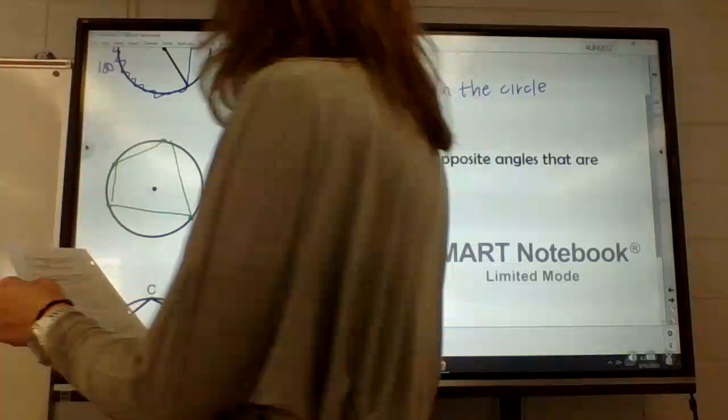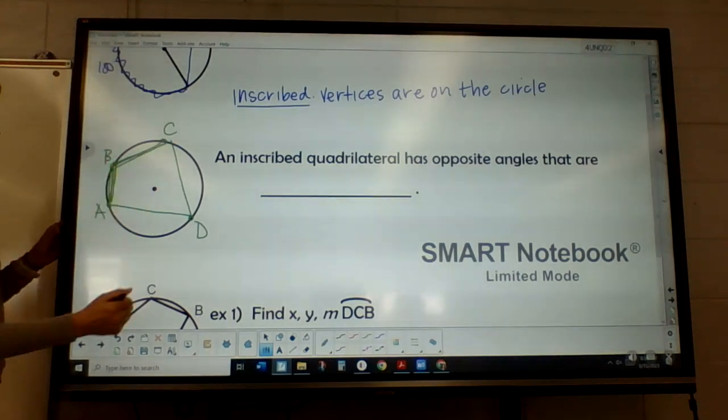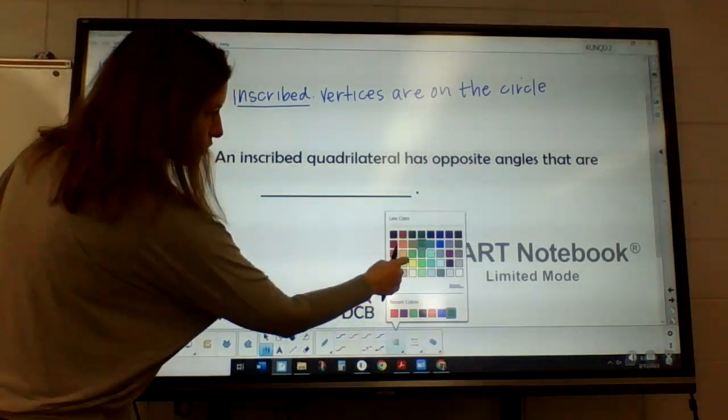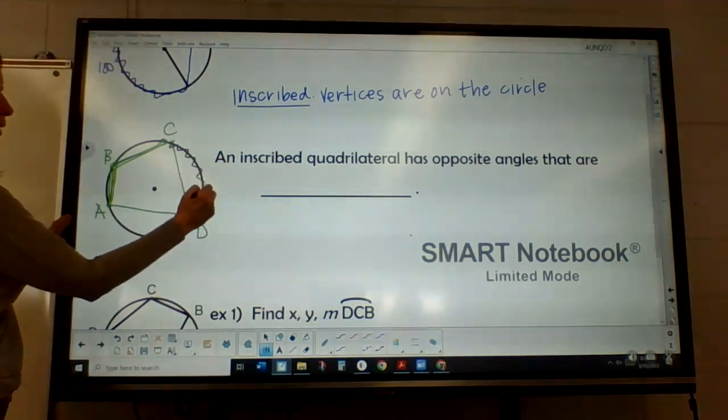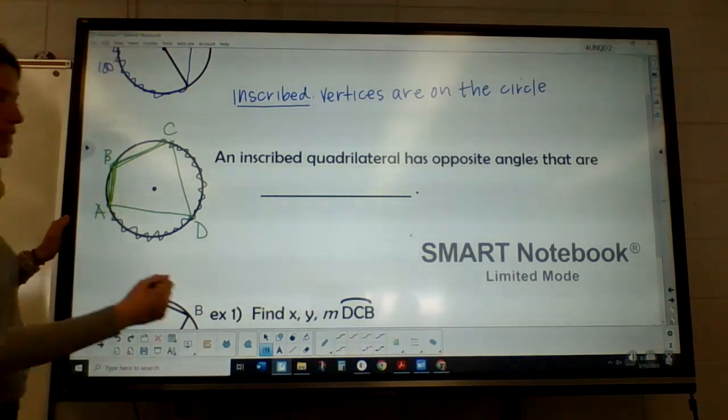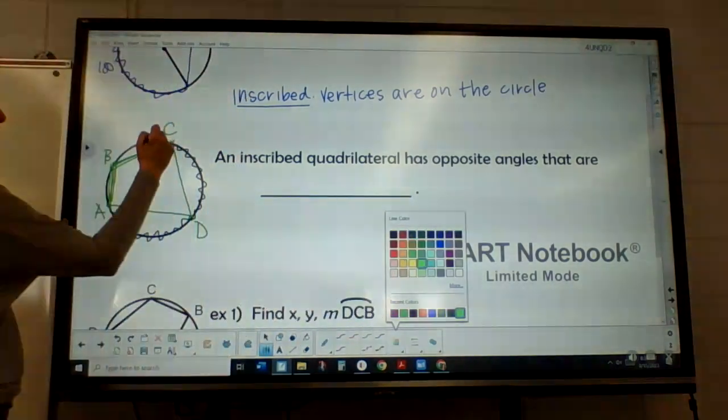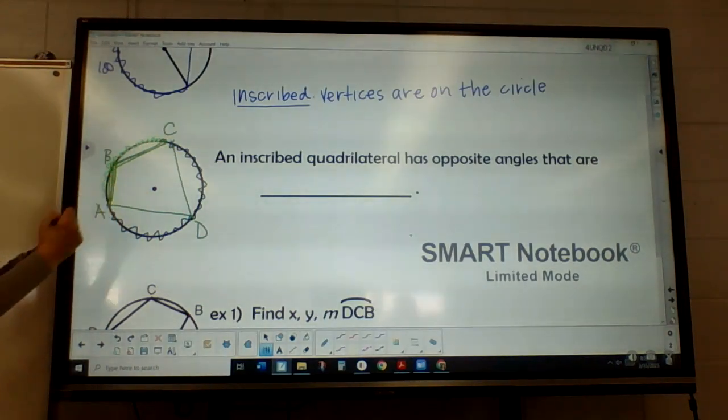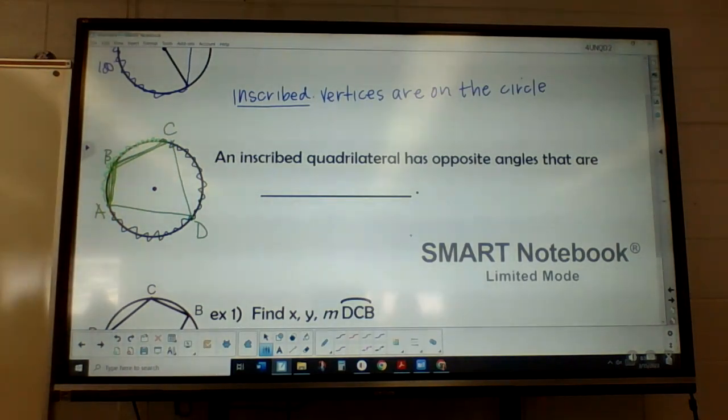So what I want to point out though is that the opposite angles have a special relationship if it's inscribed. And this is only for an inscribed quadrilateral. That if I look at angle B, the arc that goes with angle B would be across from it. So let me show you guys that. So I'm going to use this color here. So angle B's arc would be here. But then angle D's arc would be on the opposite end of that. This would be angle D's arc.